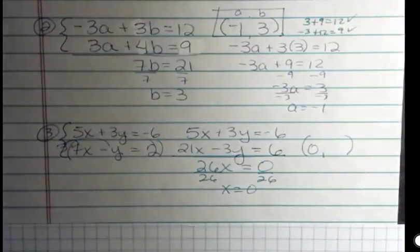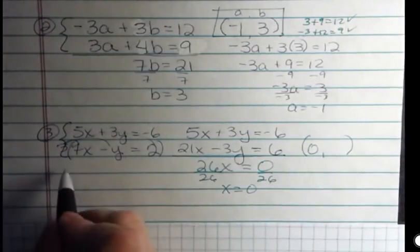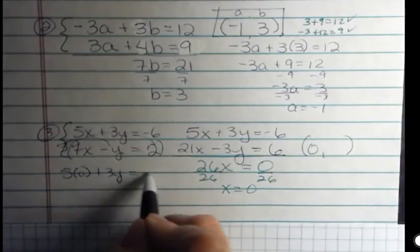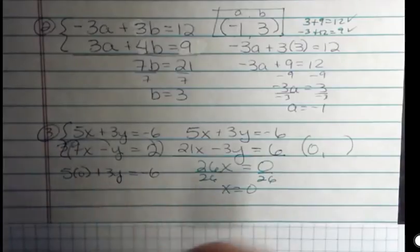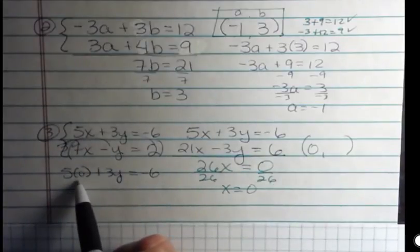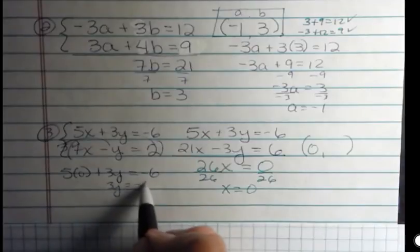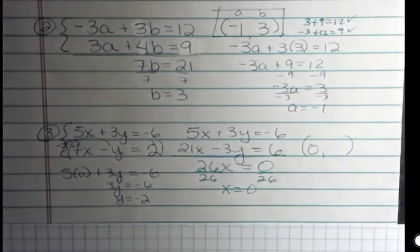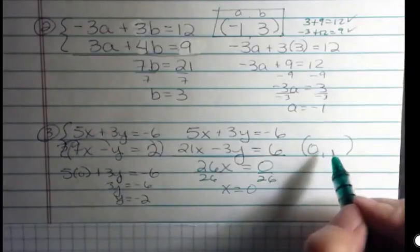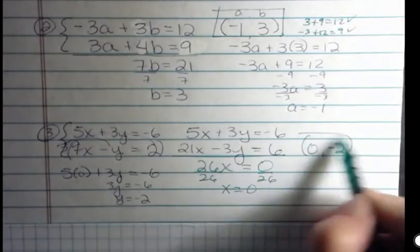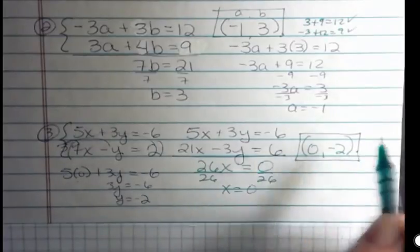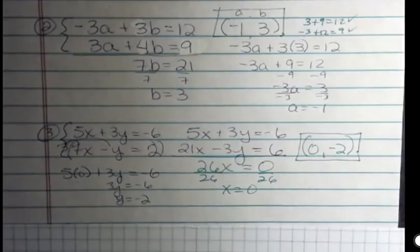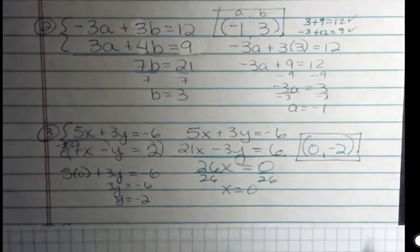But I still need to find out what y is. So if I say 5 times 0 plus 3y is negative 6. That's the top equation. I plugged in 0 that I knew. I get 3y is negative 6 or y is negative 2. Sometimes I'm not writing down the division sign underneath. If you still need to do that, that's fine. But I'm getting to the point of saying I can see that 3 times negative 2 is negative 6. So I'm not always going to show every step painstakingly like that.